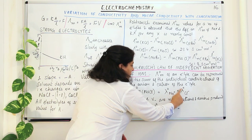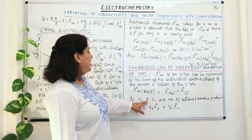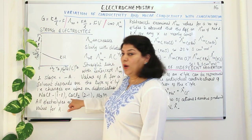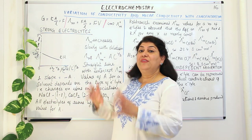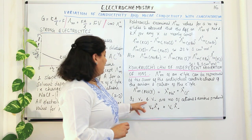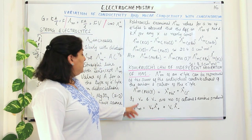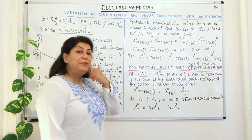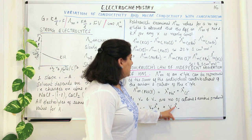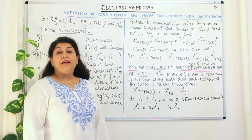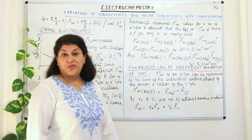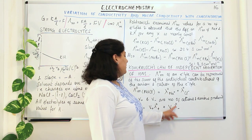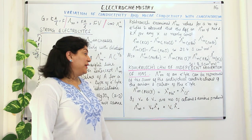So for NaCl: Λ°m(NaCl) = λ°(Na⁺) + λ°(Cl⁻). More generally, if V⁺ and V⁻ are the number of cations and anions produced according to stoichiometry, then the limiting molar conductivity is: Λ°m = V⁺ λ°₊ + V⁻ λ°₋. For example, for calcium chloride there is one mole of calcium but two moles of chloride ions, so the chloride contribution is counted twice.